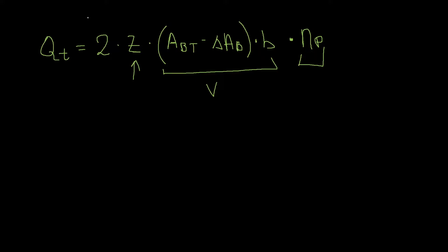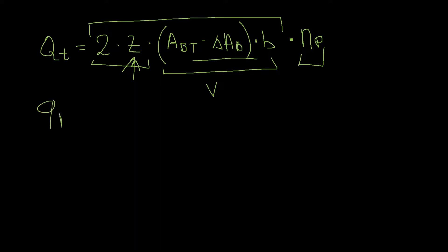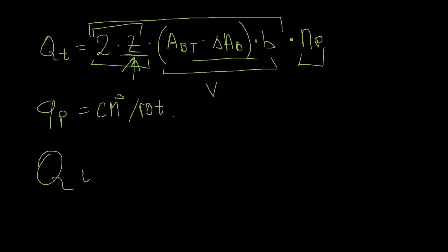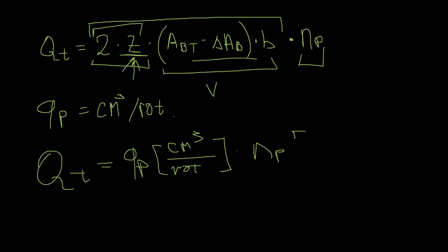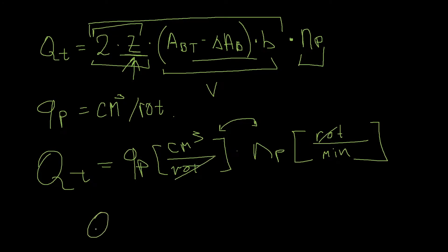This volume is then multiplied by the speed in revolutions per minute. Looking at the first part of the equation, the number of teeth times the volume gives us the specific flow of the pump — the volume per rotation, qp — in centimeters cubed per rotation. So the theoretical flow is the specific flow rate in cm³/rotation times the speed in rotations per minute. Rotations cancel and we get flow in centimeters cubed per minute.